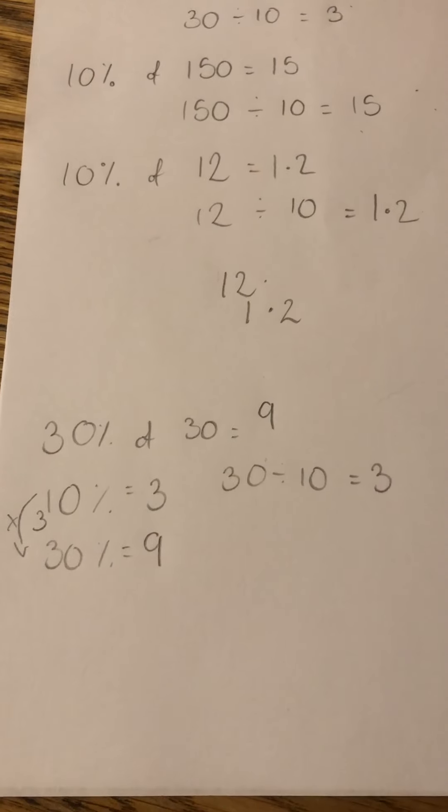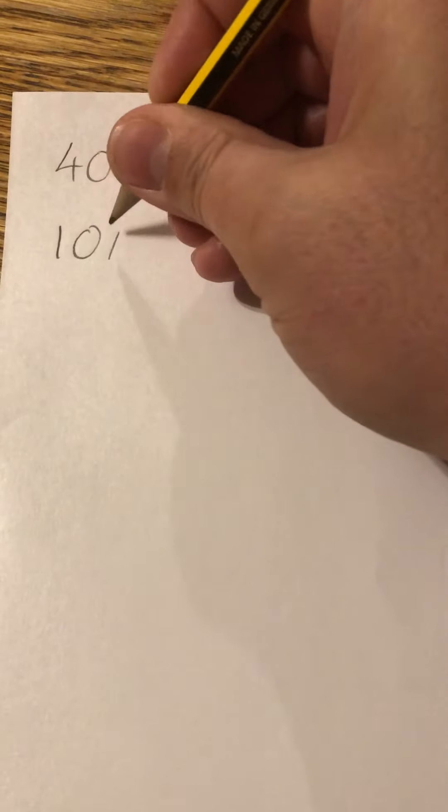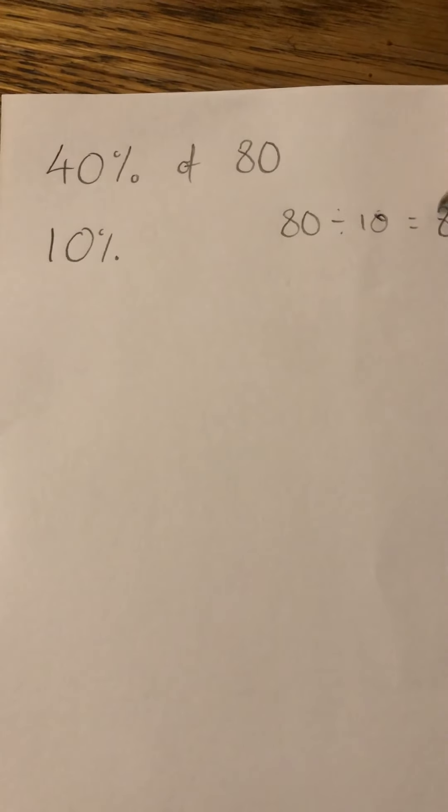Let's have a look at 40% of 80. First thing I do is find 10%. I find 10% by doing 80 divided by 10, which equals 8.